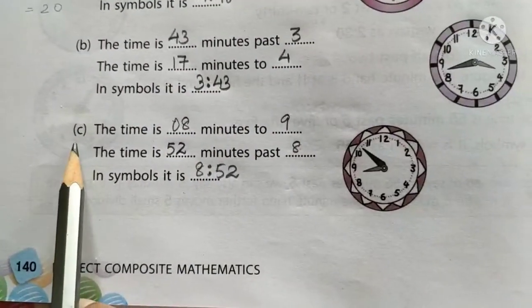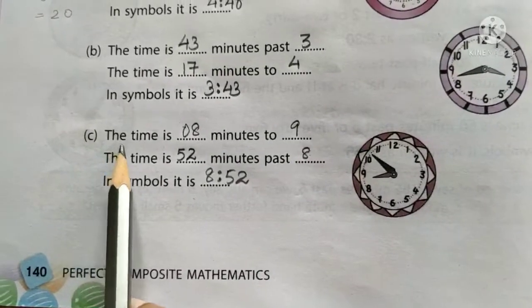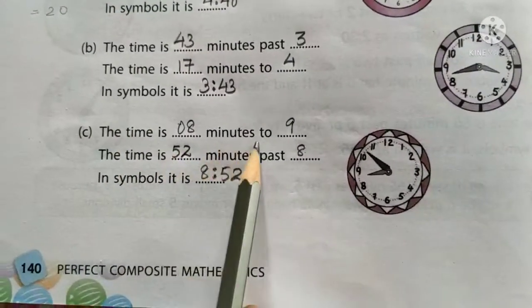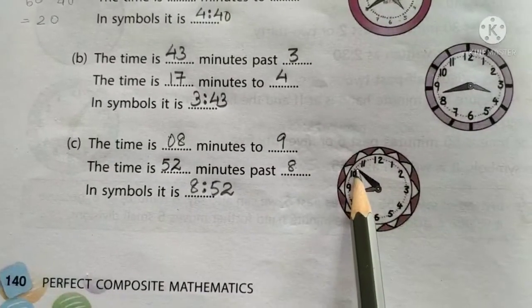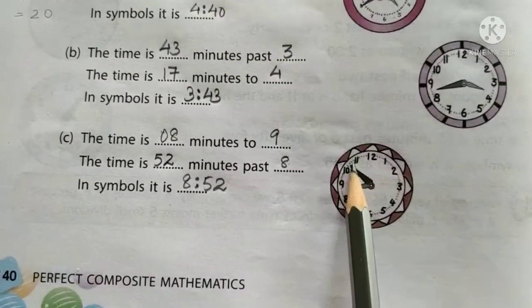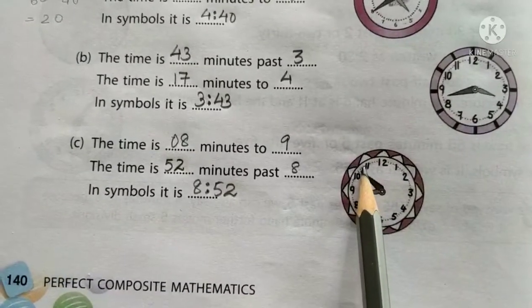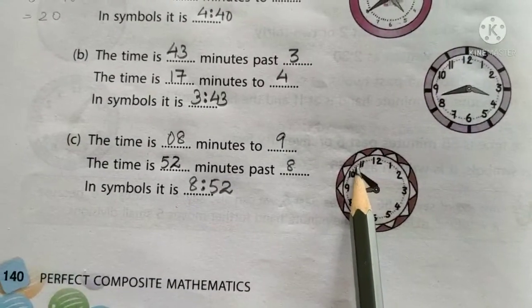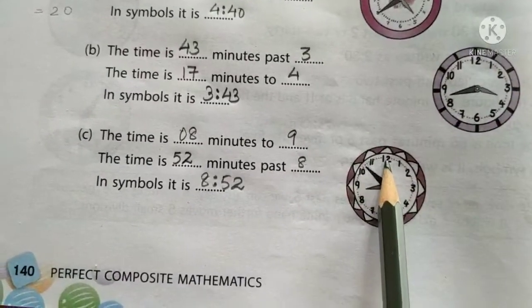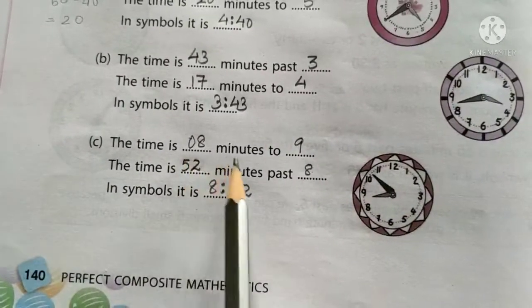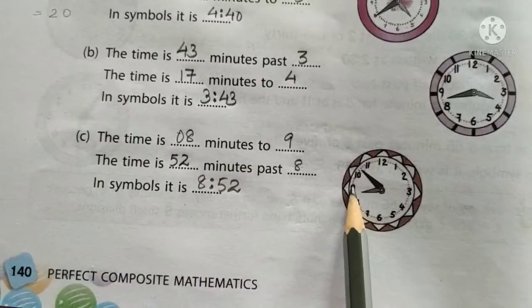Let's do another question, the C part. Now, the time is dash minutes to 9. If we look at the minute hand, it is at the third dot. Okay. How many dots are left? 8 more dots are left to reach 12. That is, the time is 8 minutes to, what is the next hour? 9.